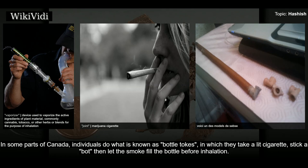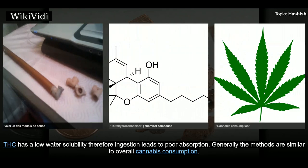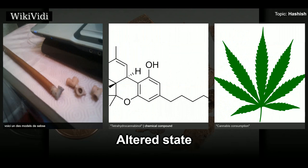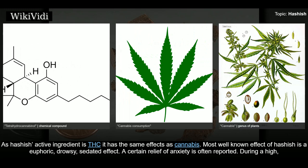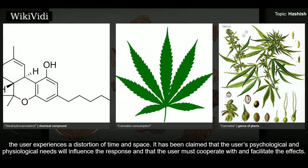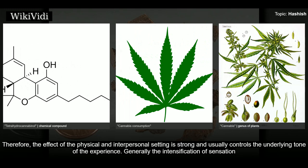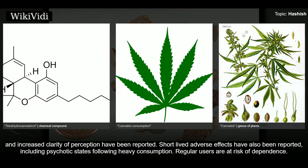In some parts of Canada, individuals do what is known as bottle tokes, letting smoke fill a bottle before inhalation. THC has low water solubility, so ingestion leads to poor absorption. As hashish's active ingredient is THC, it has the same effects as cannabis. The most well-known effect is a euphoric, drowsy, sedated effect. A certain relief of anxiety is often reported, and during a high the user experiences a distortion of time and space. Generally, intensification of sensation and increased clarity of perception have been reported, though short-lived adverse effects have also been noted.